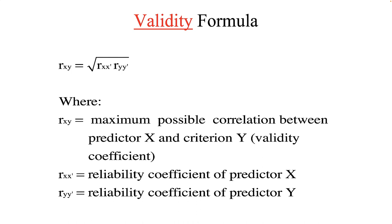As the reliability of X and Y approach a value of 1.0, the relationship between X and Y is maximized. To be clear, this formula shows the maximum value of the correlation between X and Y. This relationship is hampered greatly or enhanced greatly if high levels of reliability exist for scores on X and Y. There are other factors which contribute to whether or not X and Y are correlated, or in other words, if X is a valid predictor of the criterion Y.